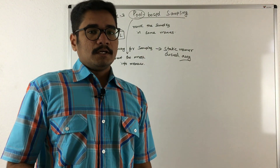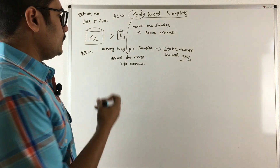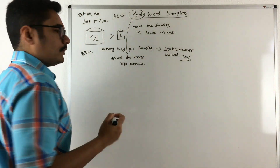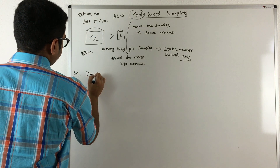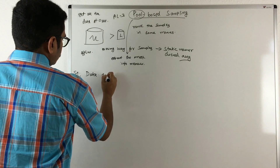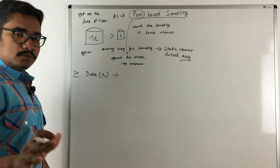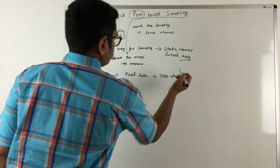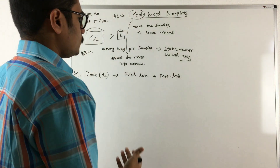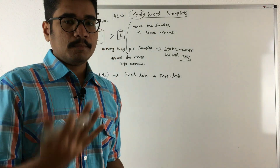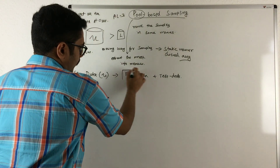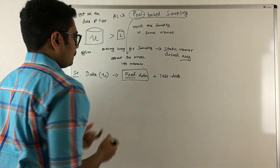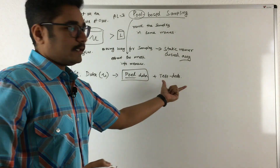There are some steps for the practical implementation of pool-based sampling, done in around ten steps. At the very first step, you take your data and divide it into two splits: your pool data and your test data. This is similar to other machine learning scenarios where you partition a dataset into training and test sets — here we use the term 'pool' since we are doing pool-based sampling.